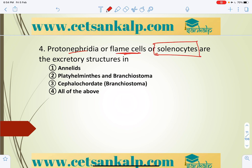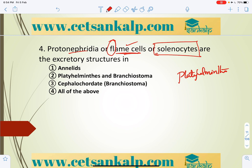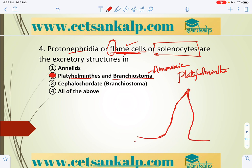Proto-nephridia are flame cells also called solenocytes, found in almost all invertebrates. Flame cells are mainly found in Platyhelminthes (flatworms) and also in cephalochordates like Branchiostoma. These cells have a tubular connection and flame-like shape that collects and eliminates nitrogenous waste, mainly in the form of ammonia.